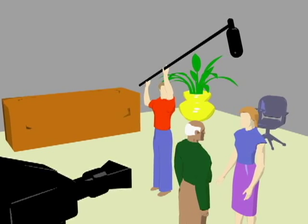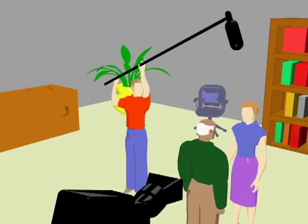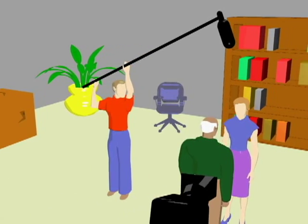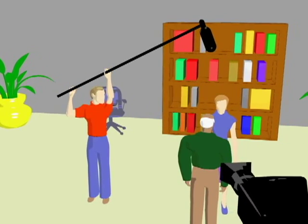In traditional boom pole operation, the boom pole is held over the head with both arms, with one arm and hand providing support near the pole's center of gravity and the other hand grasping the near end.